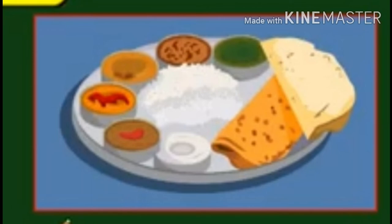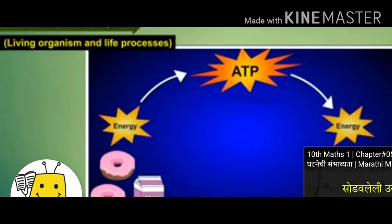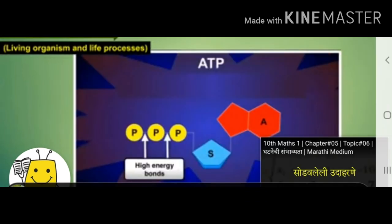Students, you know, carbohydrates of the food that we consume every day are mainly utilized for production of energy required for daily needs. This energy is obtained in the form of ATP. For this purpose, glucose — a type of carbohydrate — is oxidized step by step in the cell. This is called cellular respiration. ATP means adenosine triphosphate.